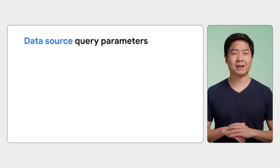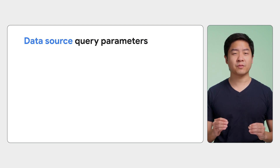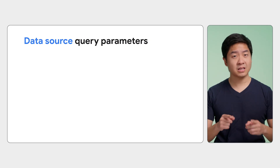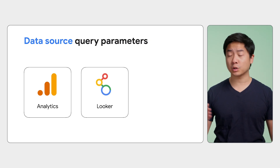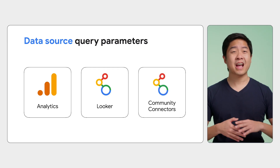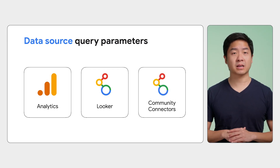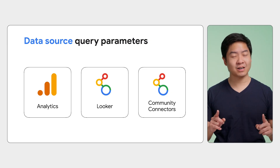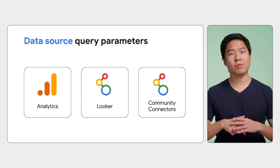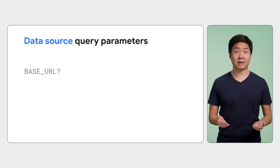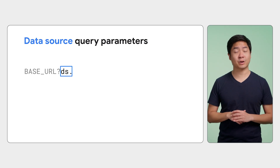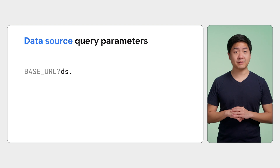Lastly, you have the data source query parameters, which configure the data source in the generated report. Each type of data source — from Google Analytics to Looker to Community Connectors — has its own specific set of parameters. They all share a common set of parameters as well. For data source query parameters, the naming convention also includes the alias of the data source in the prefix. You can find the alias in your report's list of data sources. If the alias is 'abc', the prefix will be 'ds.abc'.